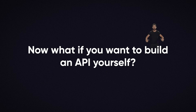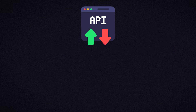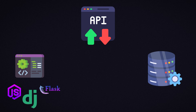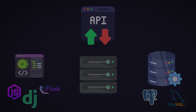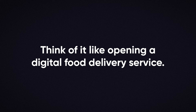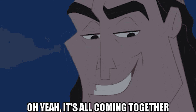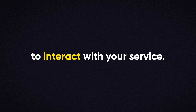Now, what if you want to build an API yourself? It's actually not as complicated as it sounds. To create an API, you need three key things: a back-end framework to handle requests, like Node.js, Flask, or Django; a database to store and retrieve data, like MySQL or PostgreSQL; and a server to host it so it's accessible online. Think of it like opening a digital food delivery service — you need a menu (the API), a kitchen (the database), and a way to deliver orders (the server). Once you have those pieces in place, you can build an API that allows other applications to interact with your service.